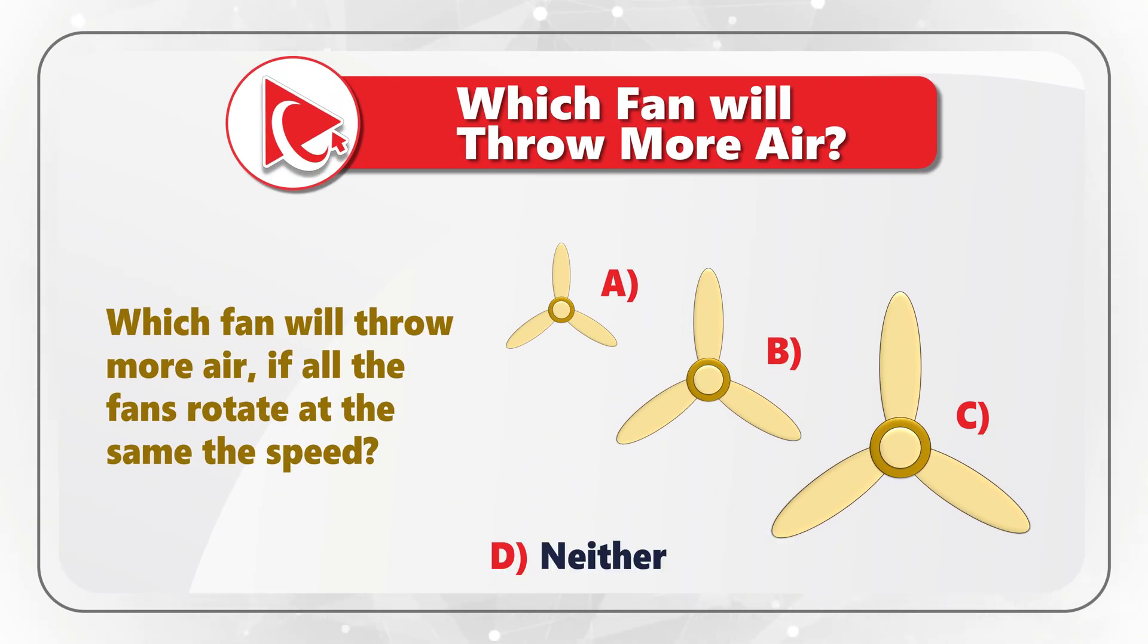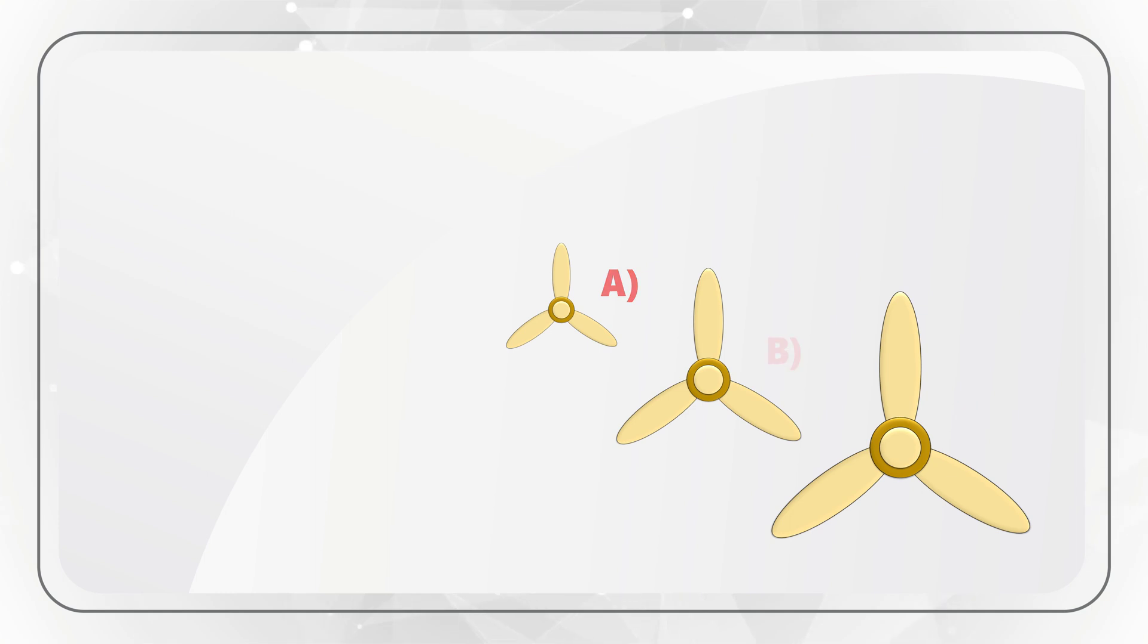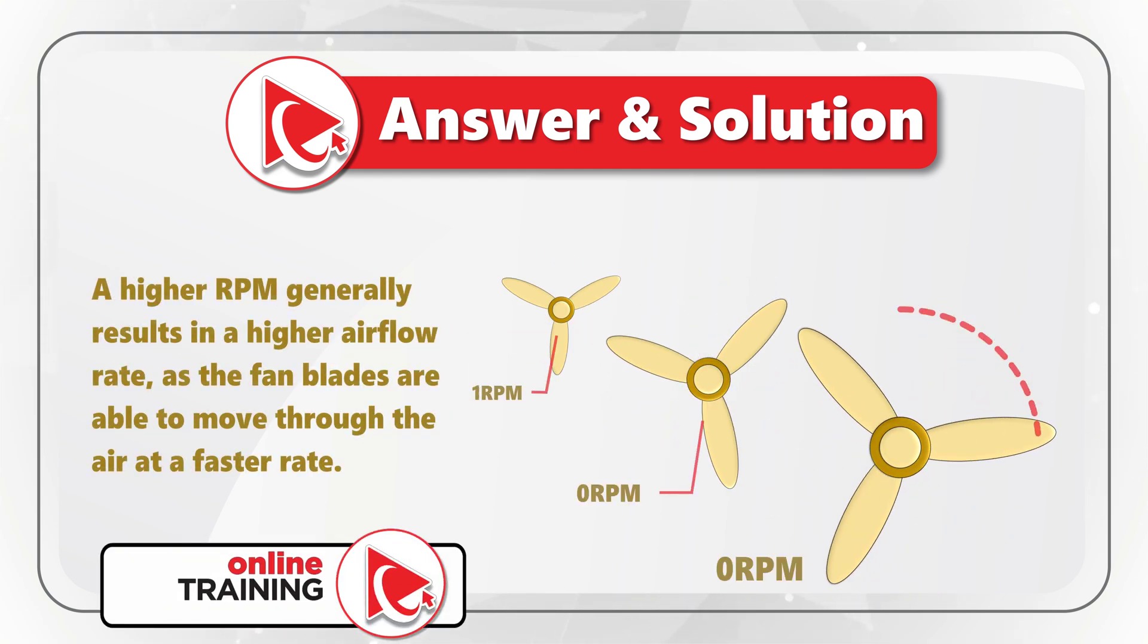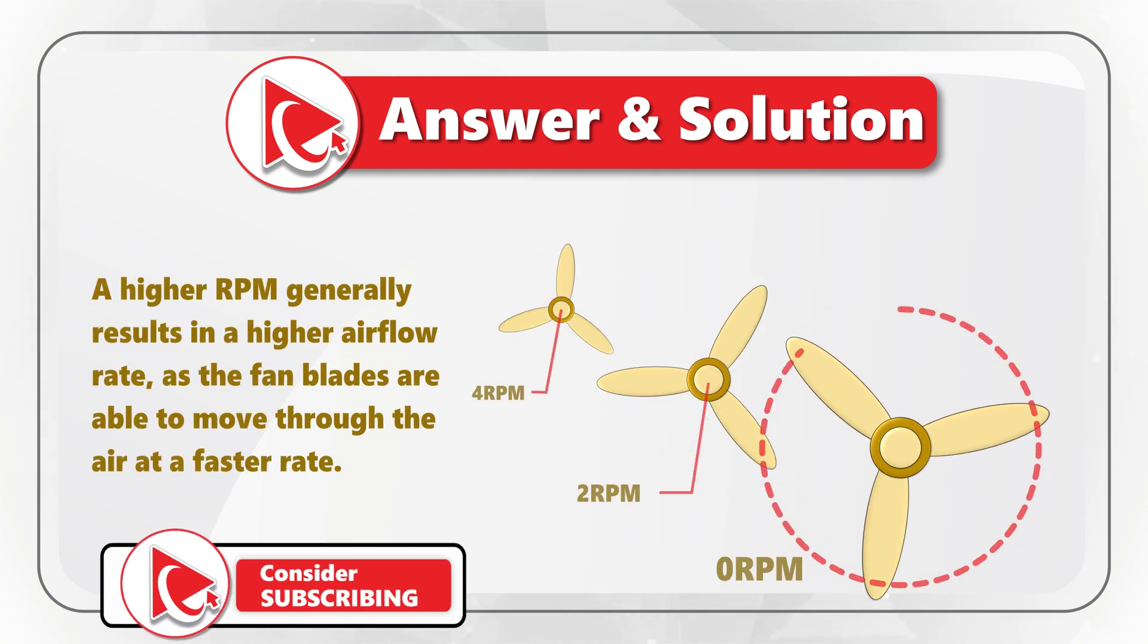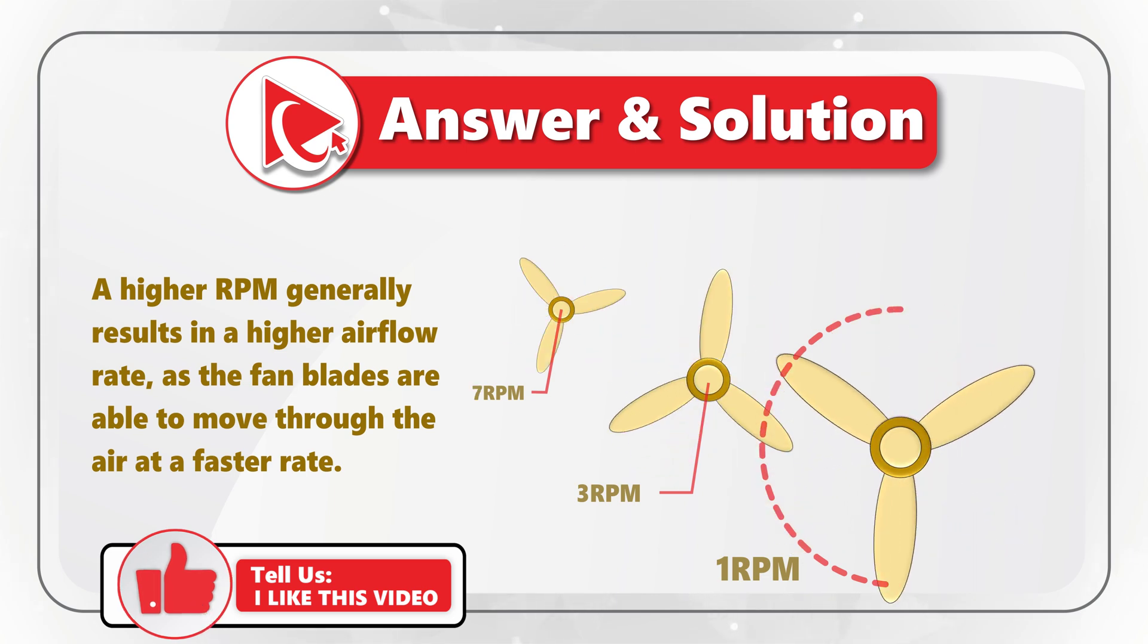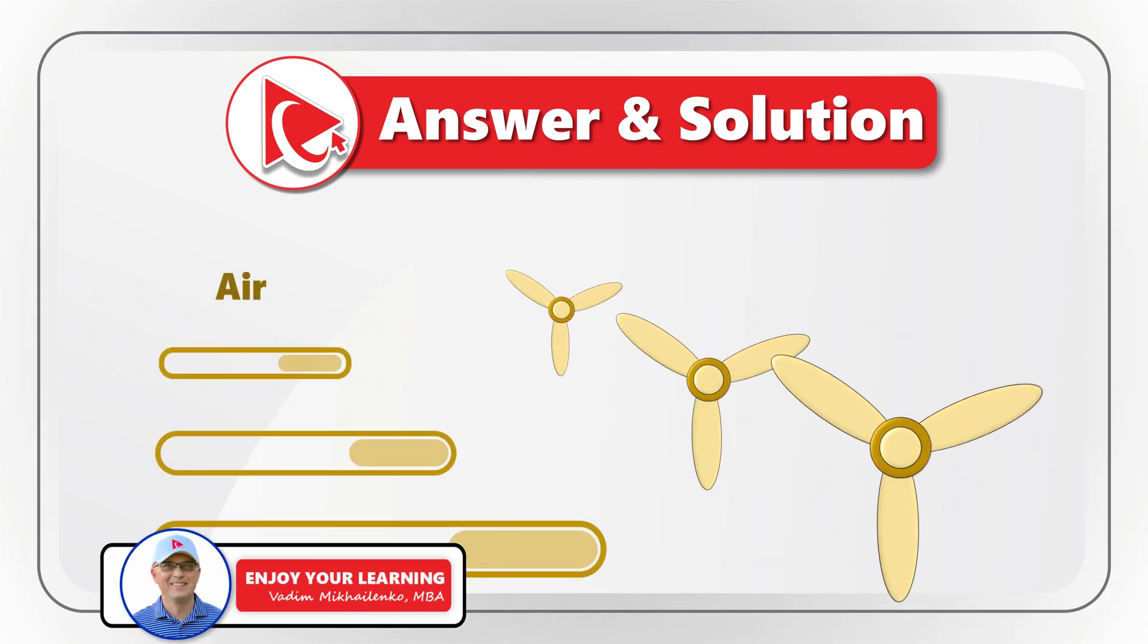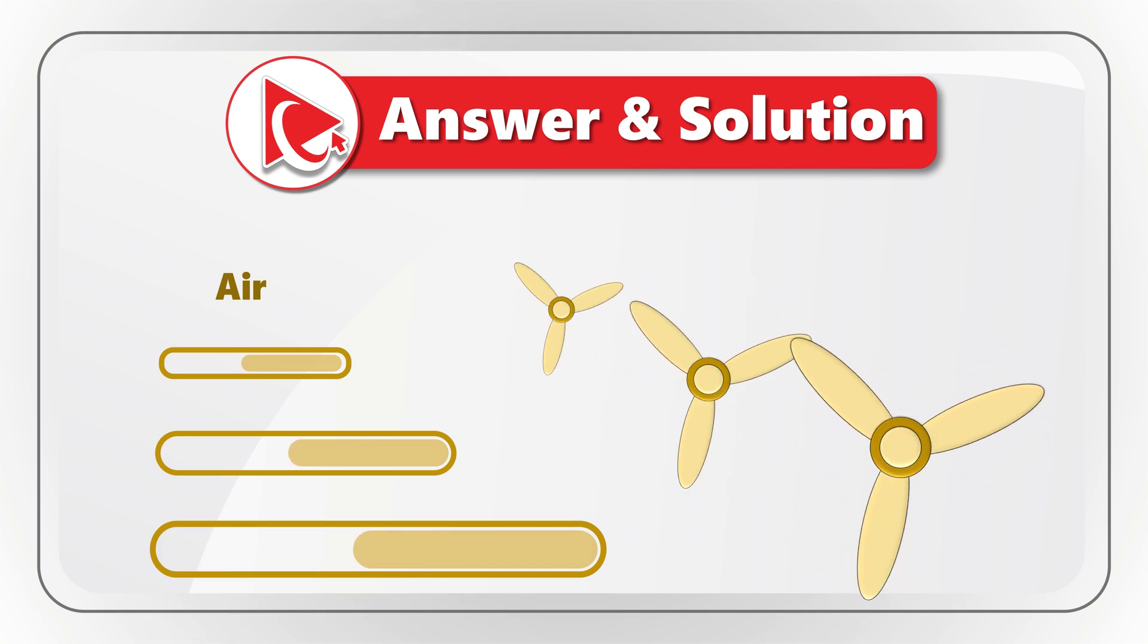As you might be well aware, there are two key factors to help determine the airflow rate. The first one is the size of the fan's blade. And the second one is rotational speed of the fan, which is measured in RPMs, which stands for revolution per minute.